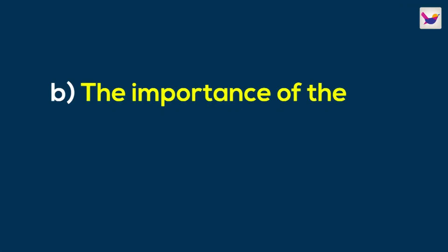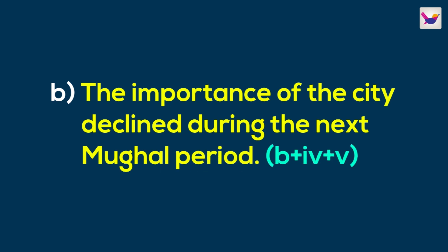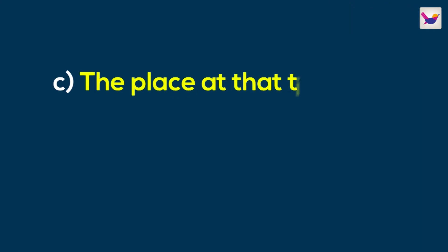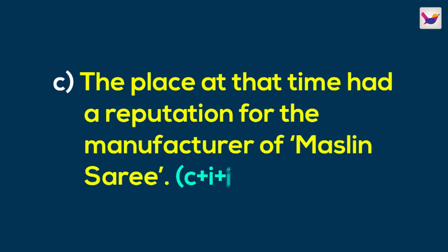The importance of the city declined during the next Mughal period. There is another option: 'the place at that time,' which is our subject. In the previous column, there is an auxiliary verb 'had,' and another line: 'had a reputation for the manufacture of Muslin Sari.' The complete sentence is: The place at that time had a reputation for the manufacture of Muslin Sari.